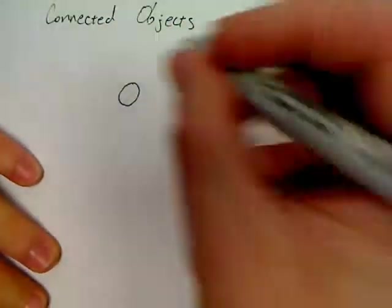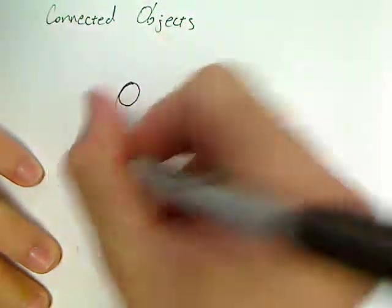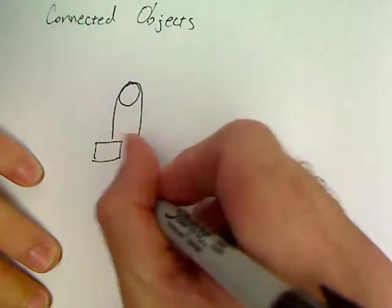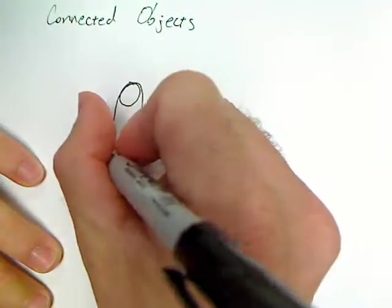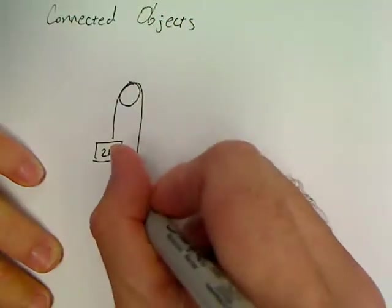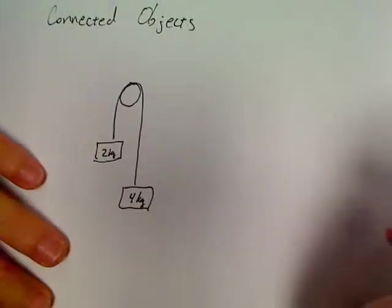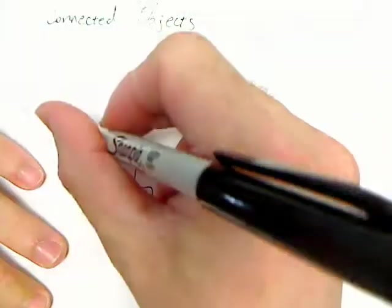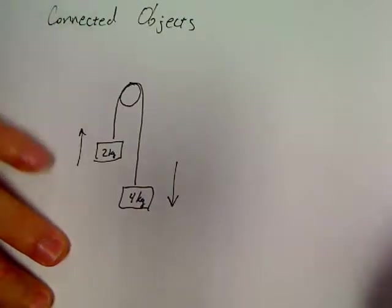So we've got the pulley up at the top. I'm going to run a string over it. We've got two weights hanging over it. One has a mass of two kilograms, the other one has a mass of four kilograms. We know that this one is going up, this one is falling down. So this is our basic connected objects problem.